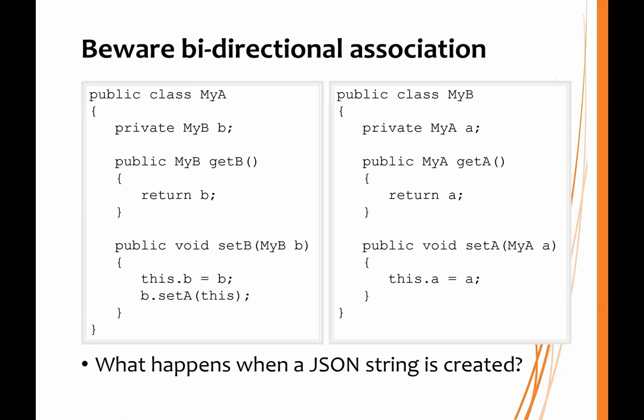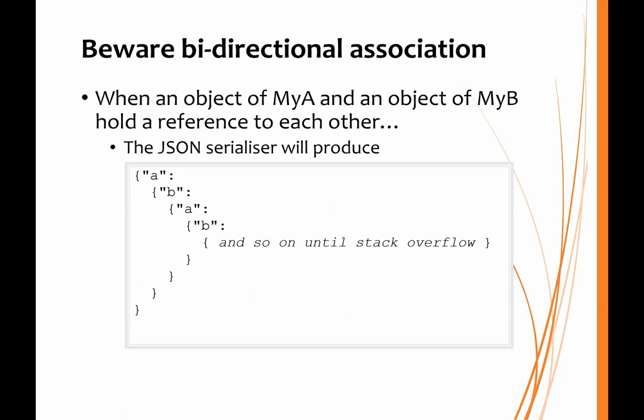When the JSON serializer tries to convert the object of MyA and the object of MyB, the serializer will output field A followed by the object B that the field refers to. But when it tries to serialize B, it produces a field A because it points back to A, creating a recurring cycle: to convert A you have to convert B, but to convert B you have to convert A, and so on, until you get a stack overflow exception.